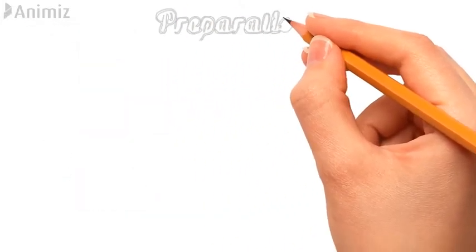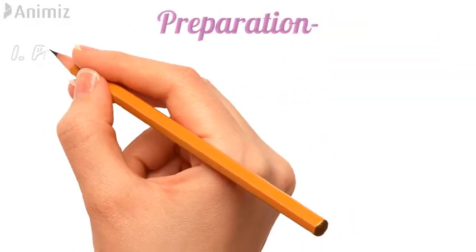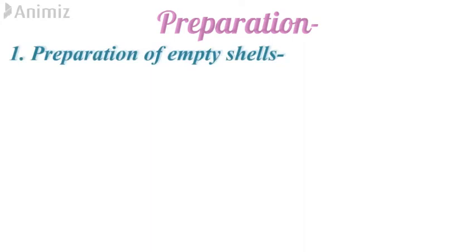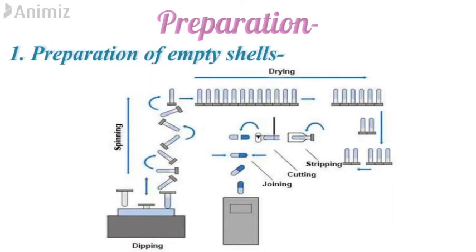Now let's see the various steps of preparation of a hard gelatin capsule. The first step is the preparation of empty gelatin shells, which includes steps like dipping, spinning, drying, stripping, cutting, and then joining.